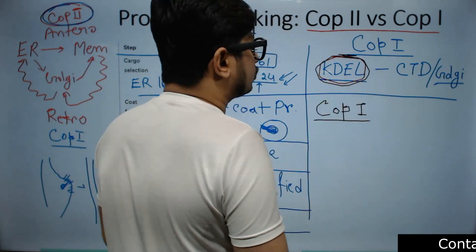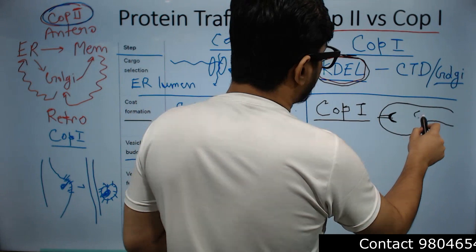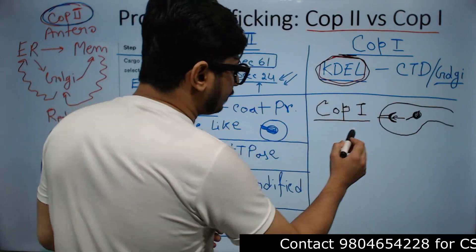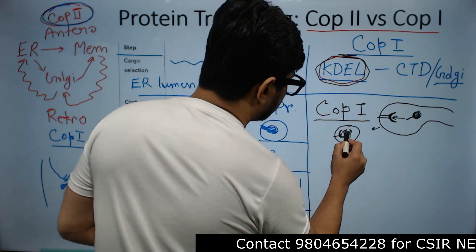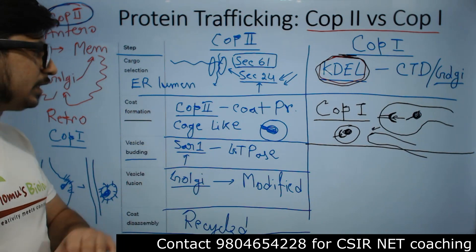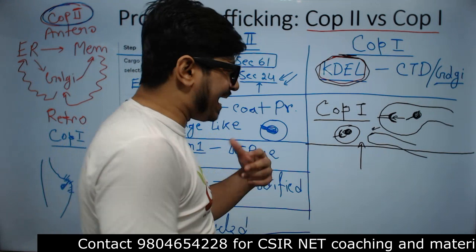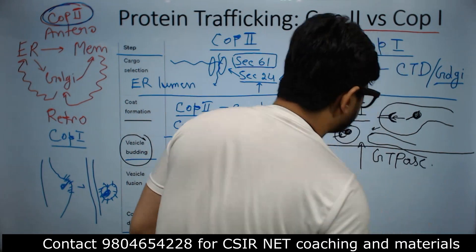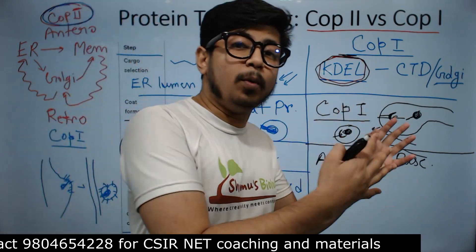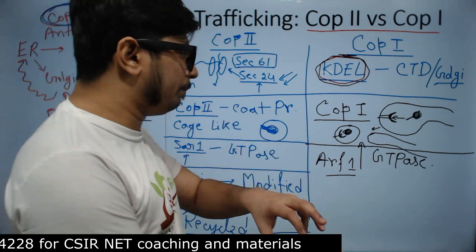COP1, along with the KDEL signal, attaches to the protein. In the Golgi apparatus, there are KDEL receptors, and the protein with KDEL signal binds to the KDEL receptor. After binding, the protein bulges off the Golgi while the rest of the Golgi apparatus remains as is. Vesicle budding then occurs, again requiring energy from GTP hydrolysis. ARF1 is the GTPase used for the COP1-mediated pathway, and it helps in the budding of the vesicle.